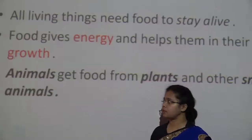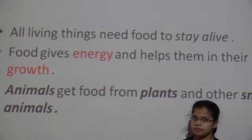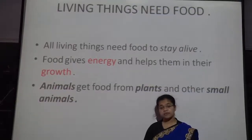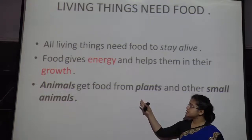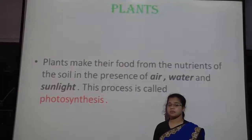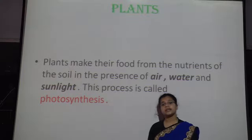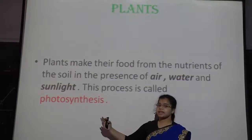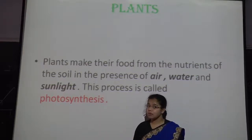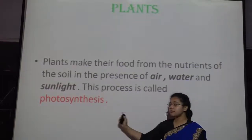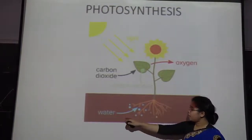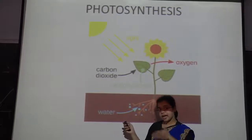Living things need food. We all need food to get energy. Animals get food from plants. Plants also need food — they prepare their food with the help of water and minerals in the presence of sunlight, through the process called photosynthesis. Plants take in sunlight, water, and minerals, and they need carbon dioxide, and they release oxygen by preparing food.